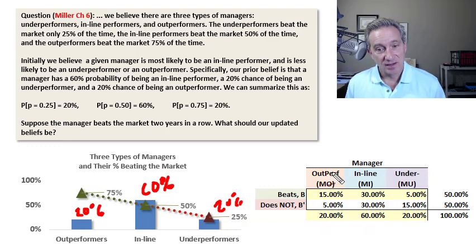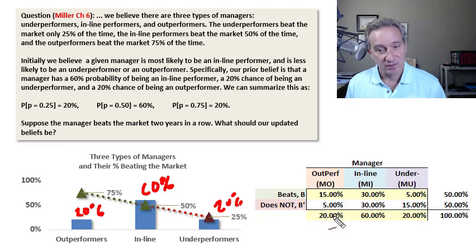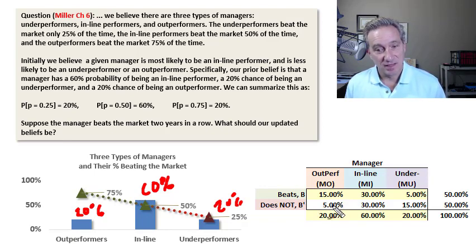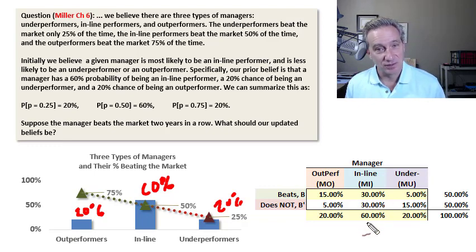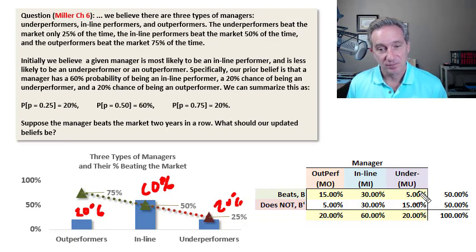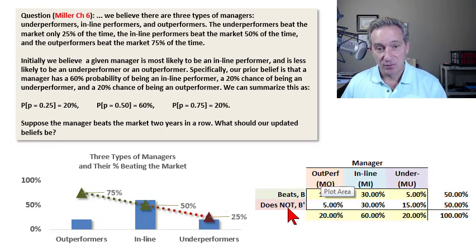For inline managers, who are unconditionally 60% of the population, we're told that 50% beat and 50% do not beat the market, so these are split 30-30. For underperformers, 25% of the 20% beat the market, so that cell is 5%. That completes the joint probability matrix, which is also a good alternative way to solve Bayes' theorem, although for me the tree is more intuitive than the probability matrix.